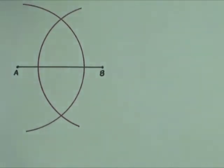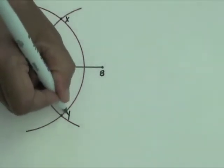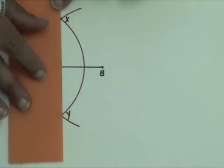Label the two points of intersection as X and Y. Draw bisector XY by joining points X and Y.